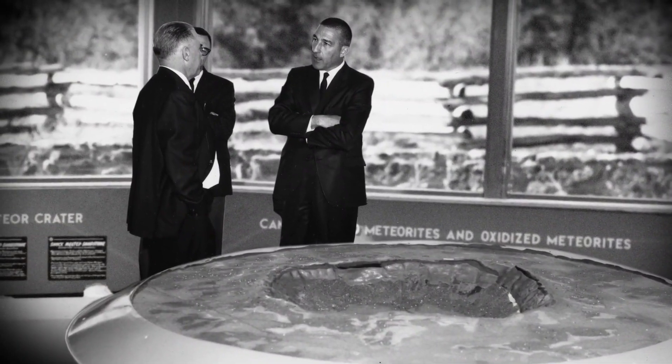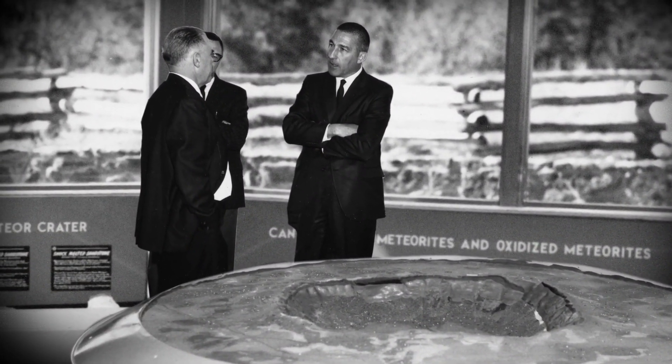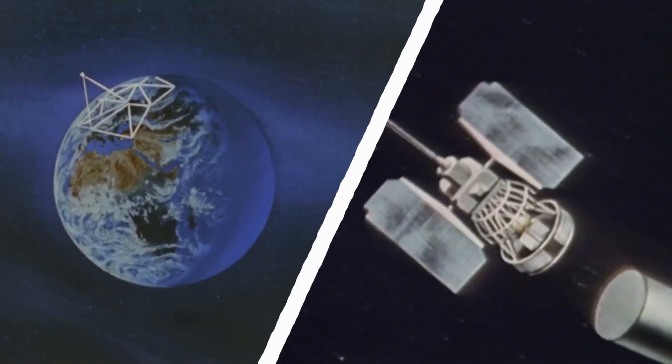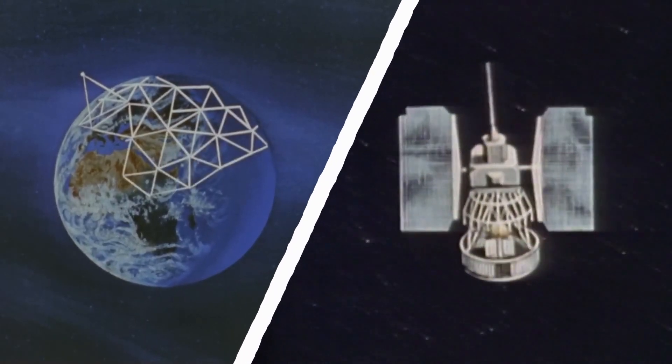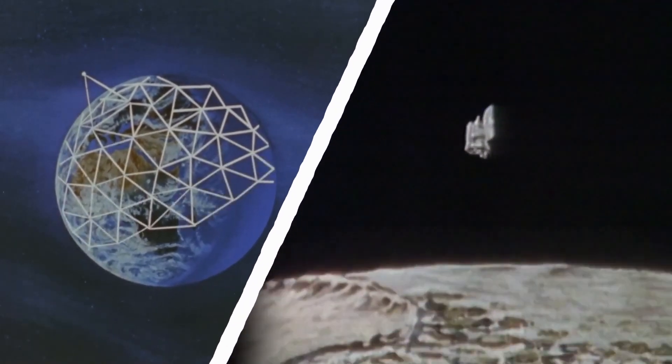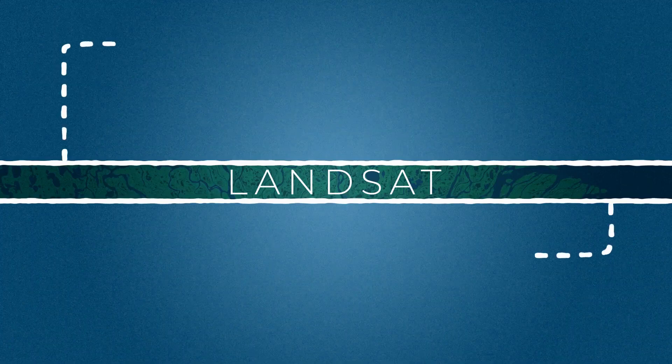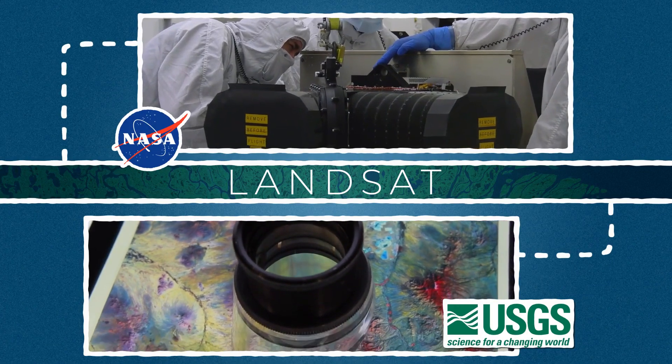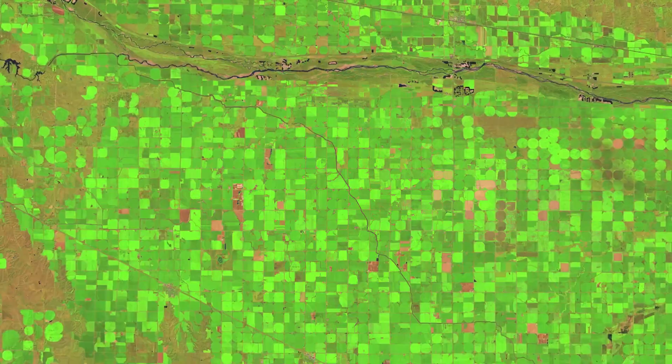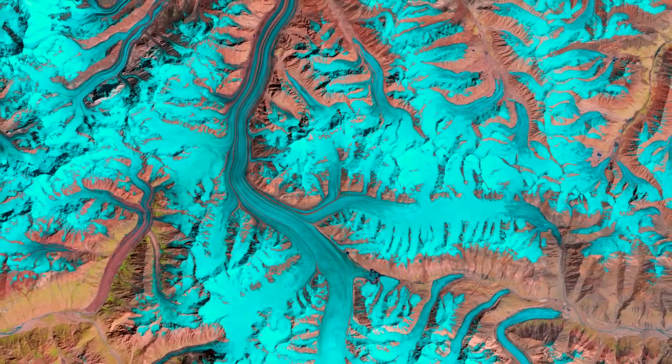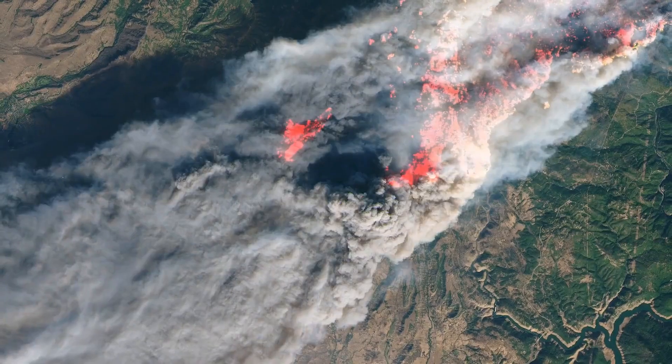50 years ago, the U.S. Geological Survey had an idea: satellites orbiting Earth that could help us monitor our natural resources. Today, the Landsat program is jointly managed by NASA and the USGS, providing an unparalleled record of Earth's changing landscapes for the benefit of all.